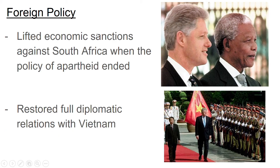A couple of other big policy changes: during the Reagan administration, Reagan set economic sanctions on South Africa. This was a way to punish South Africa because they were doing their own version of segregation called apartheid — basically the separation of blacks and whites in South Africa. To try to get them to lift apartheid, Reagan said we're not going to trade with you and imposed economic penalties on South Africa. After apartheid ended, Bill Clinton said it's time to lift those sanctions. You can see him in the picture here with Nelson Mandela, basically lifting those sanctions and creating better ties with South Africa.